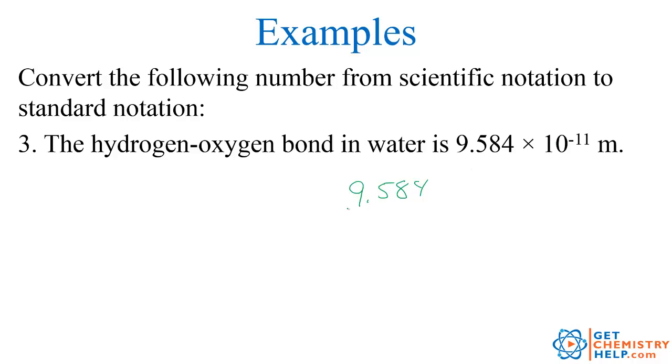The 10 to the negative 11th tells me it's basically been divided by 10 eleven times. So if you're dividing, it's going to be a small number. I'm going to move the decimal back to the left. How many times? 11 times. So 1, 2, 3, 4, 5, 6, 7, 8, 9, 10, 11.